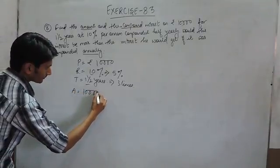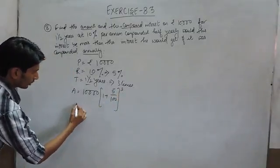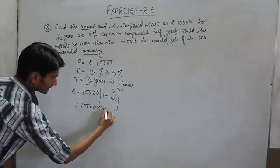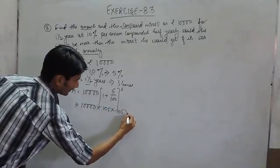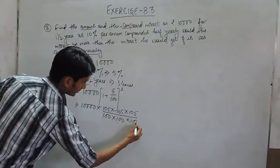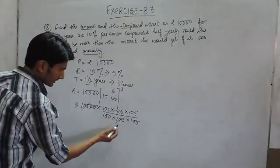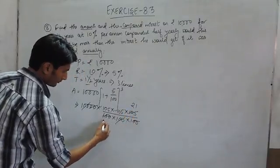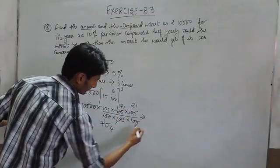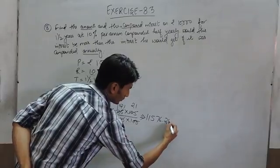We know that if the interest is payable half yearly, the rate becomes half, so the rate will become 5%. So we can find the amount. The amount will be 1000 multiplied by 105/100 cubed, which is 105 × 105 × 105 upon 100 × 100 × 100. After cancellation, we get 521 and 524, and multiplying these numbers and cancelling by 4, this gives rupees 1157.625.